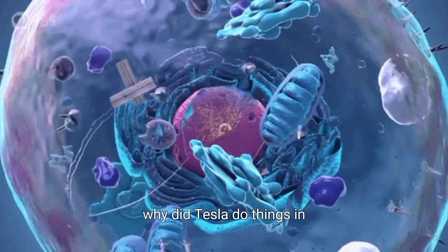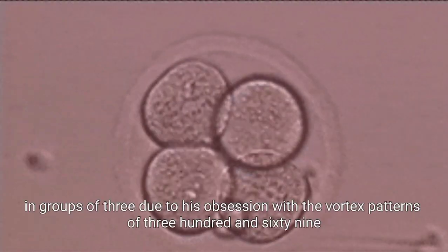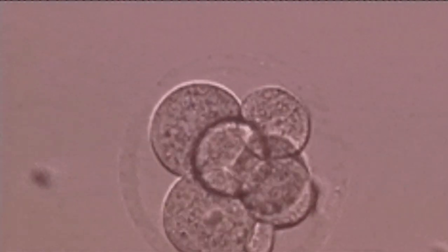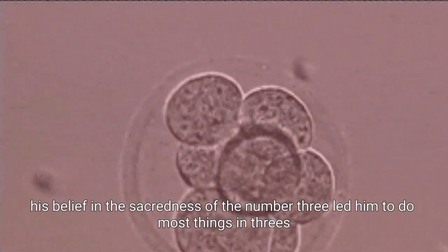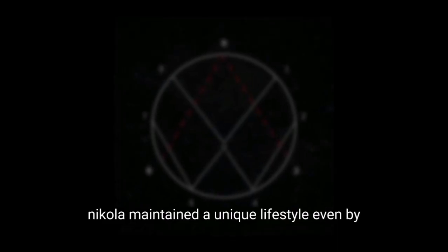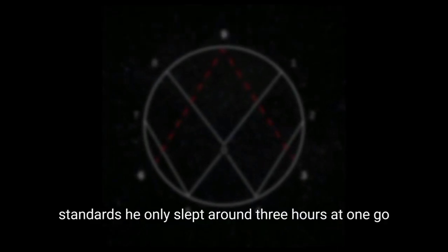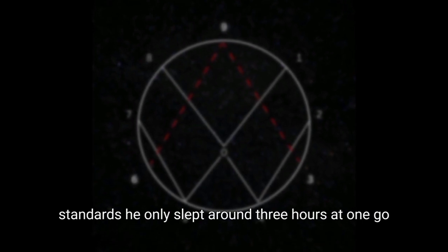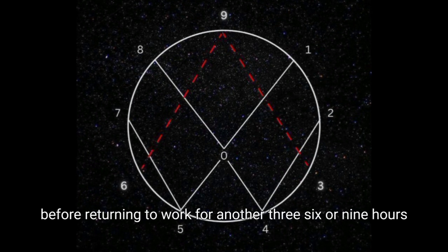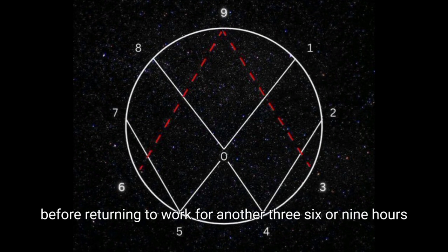Why did Tesla do things in threes? Tesla did everything in groups of three due to his obsession with the vortex patterns of 369. His belief in the sacredness of the number three led him to do most things in threes. Nikola maintained a unique lifestyle, even by today's standards. He only slept around three hours at one go, worked from 9 a.m. until 6 p.m., and then ate dinner before returning to work for another 3, 6, or 9 hours.